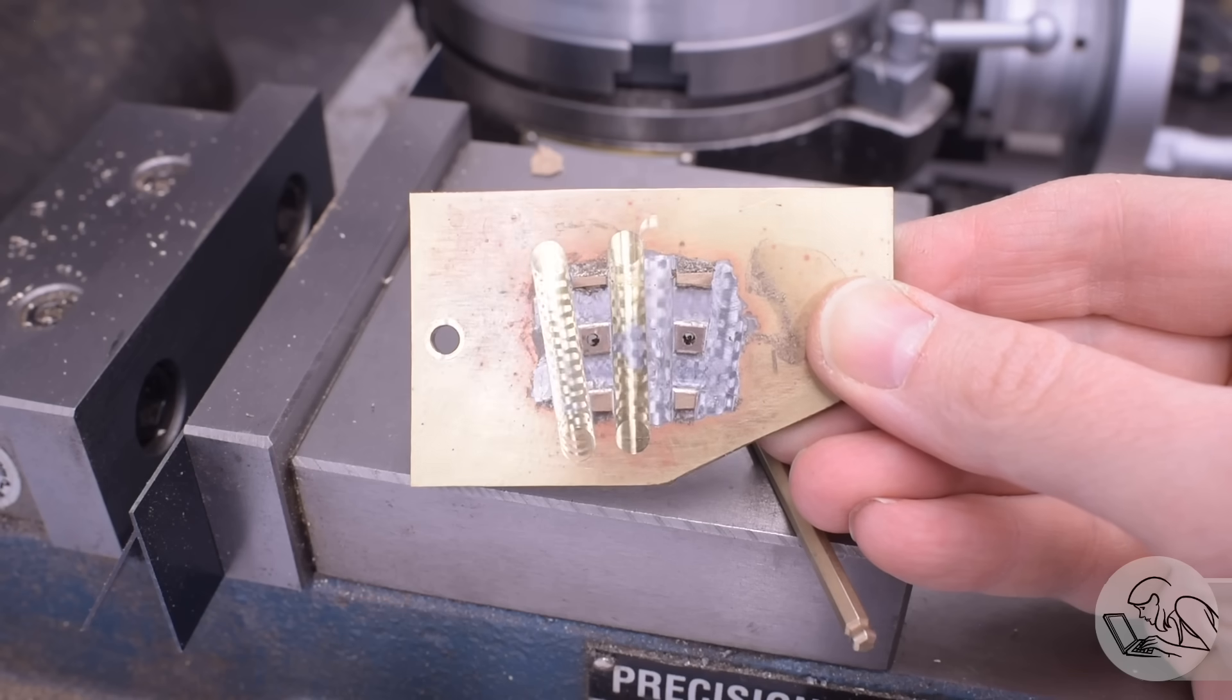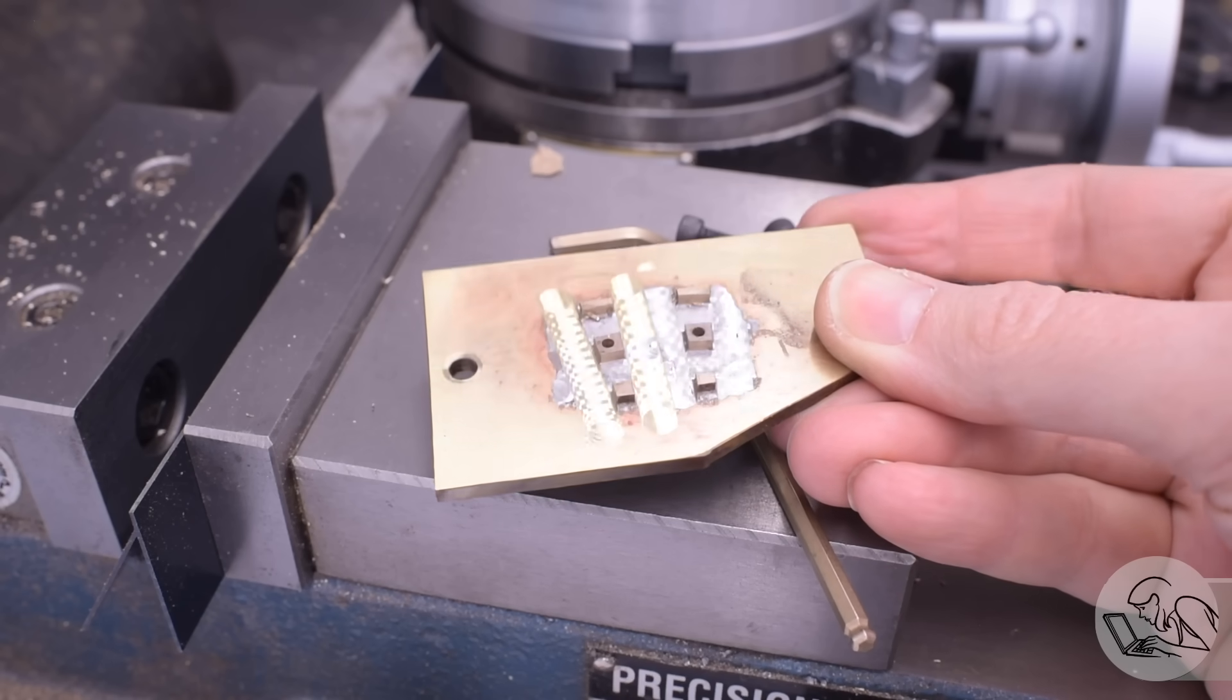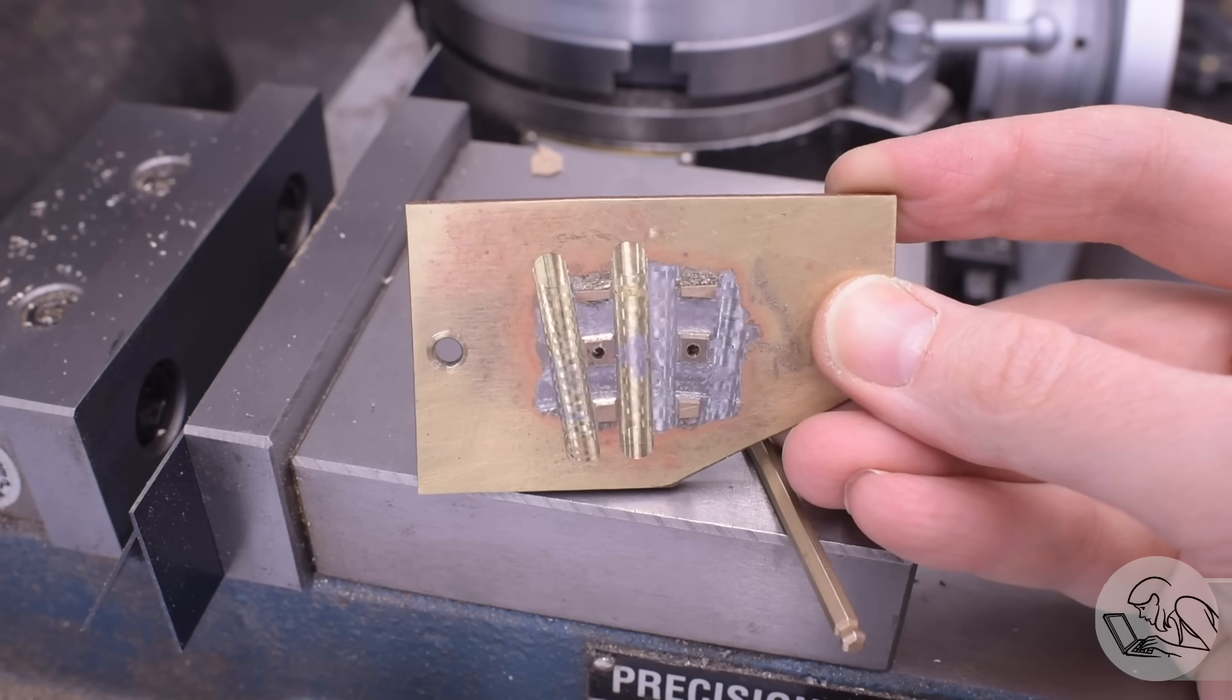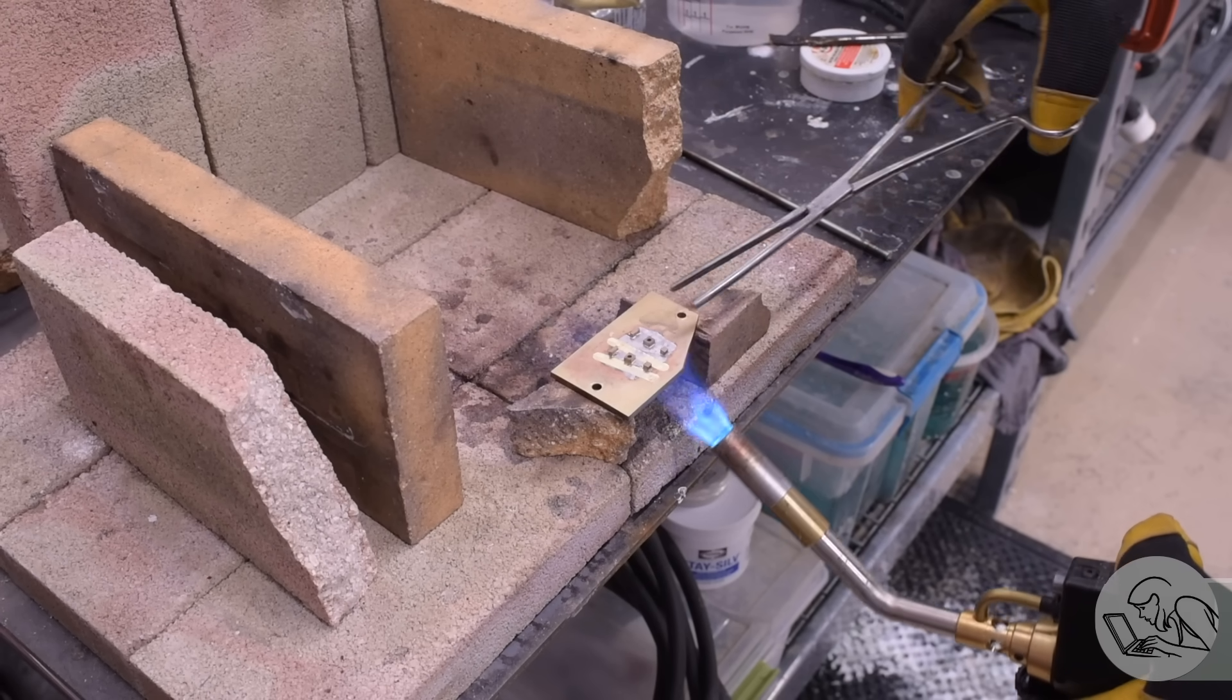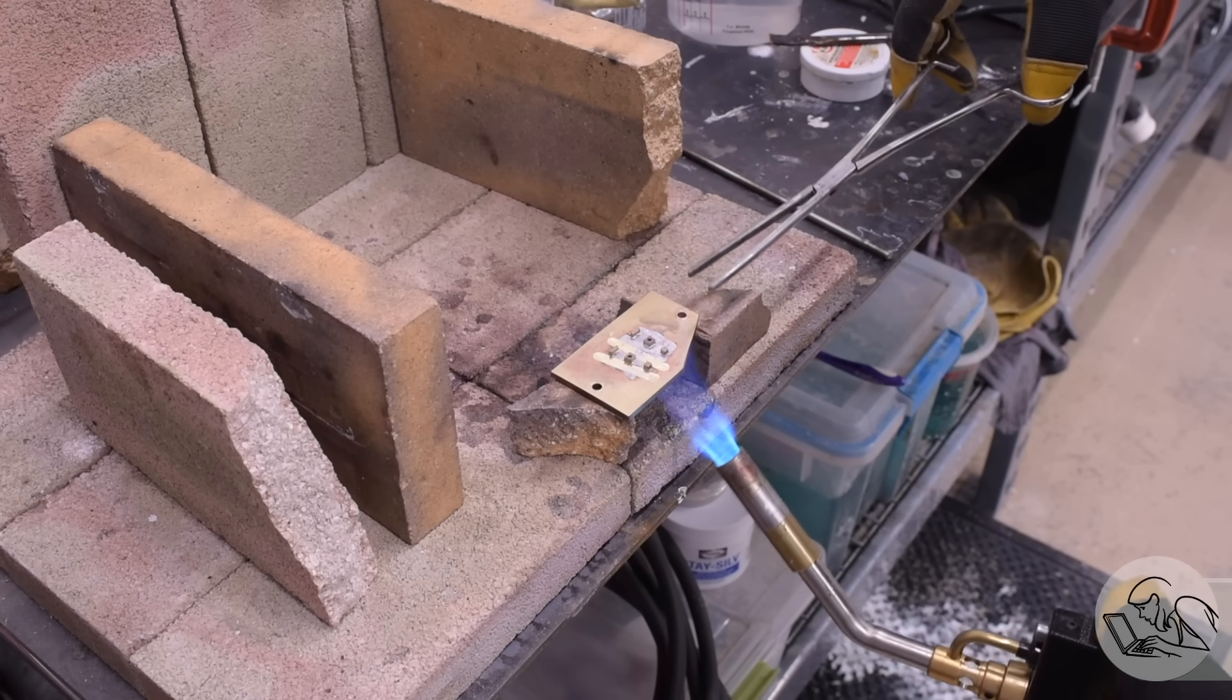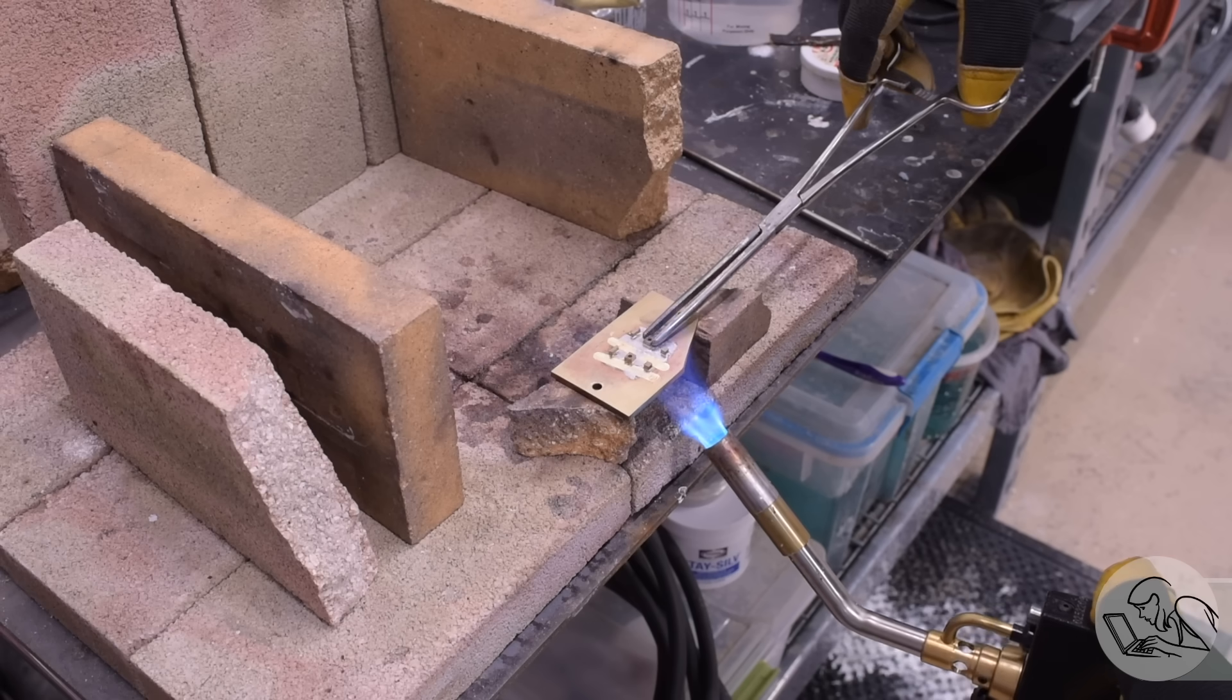Those came out looking pretty good though so let's liberate them now from their soft soldered fixture prison. That's a simple matter of warming them up once again at the hearth and plucking them off. Again this takes very little heat because this is just soft solder and the parts are also now really really tiny.